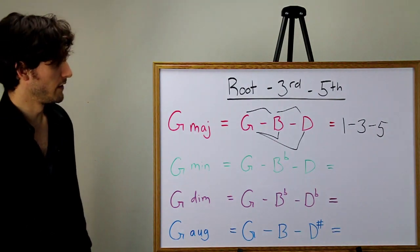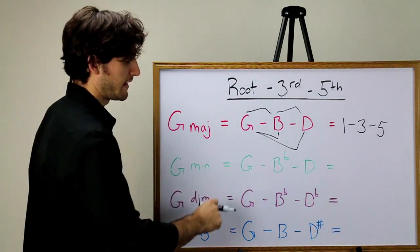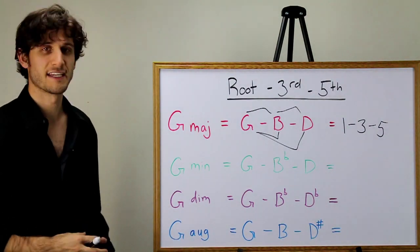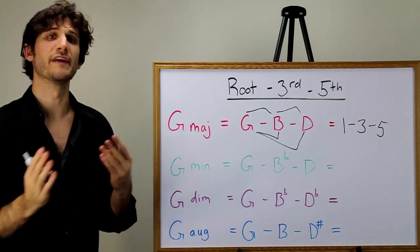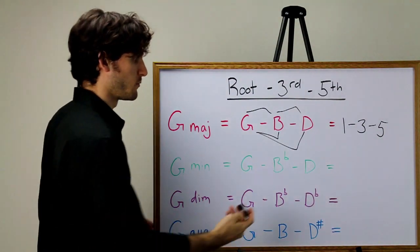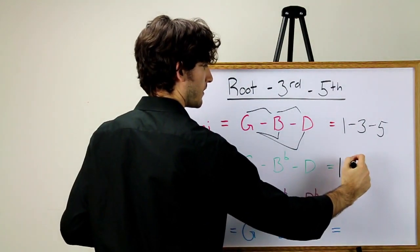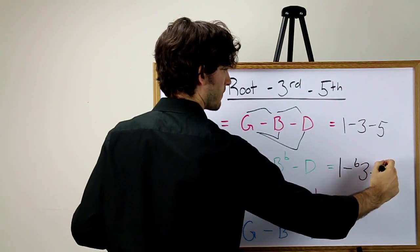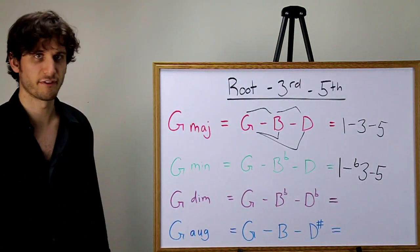So we have one different note. We have B flat. Our third in this minor chord has been what we call flatted. It got moved down by a half step. And so we write it like this: one, flat three, five.